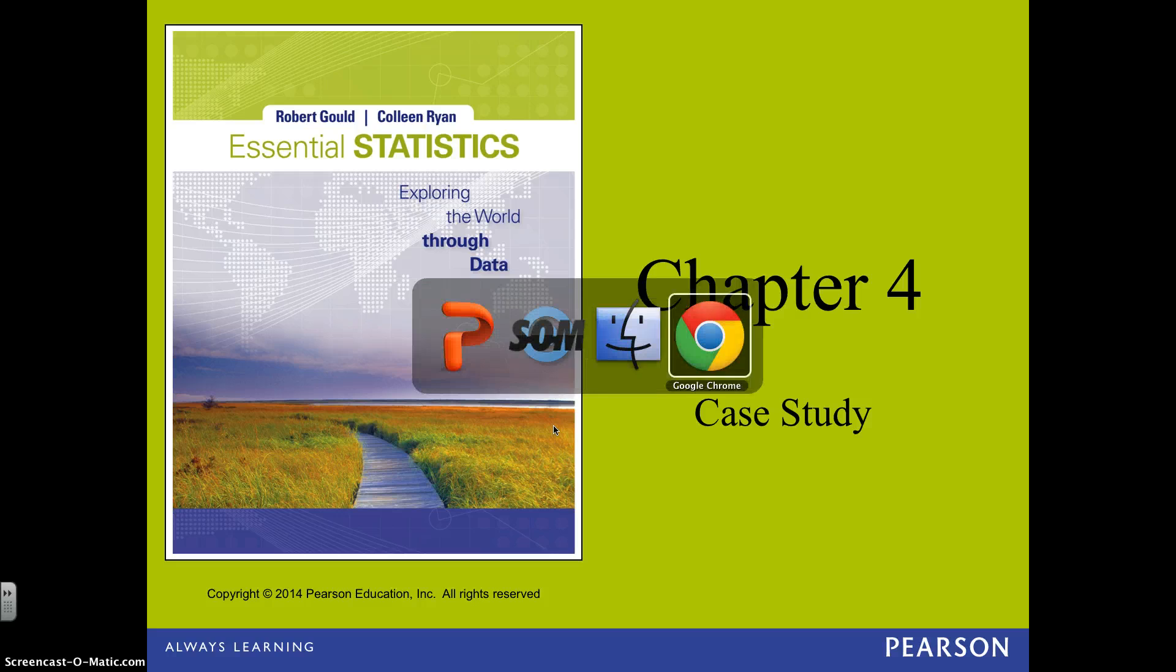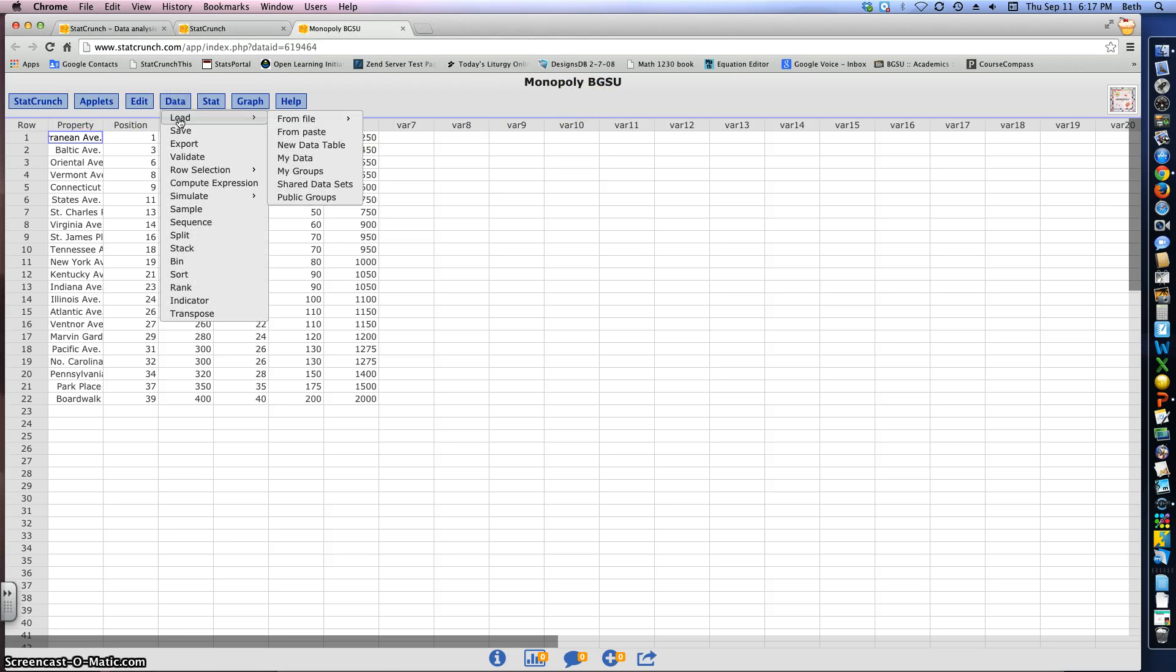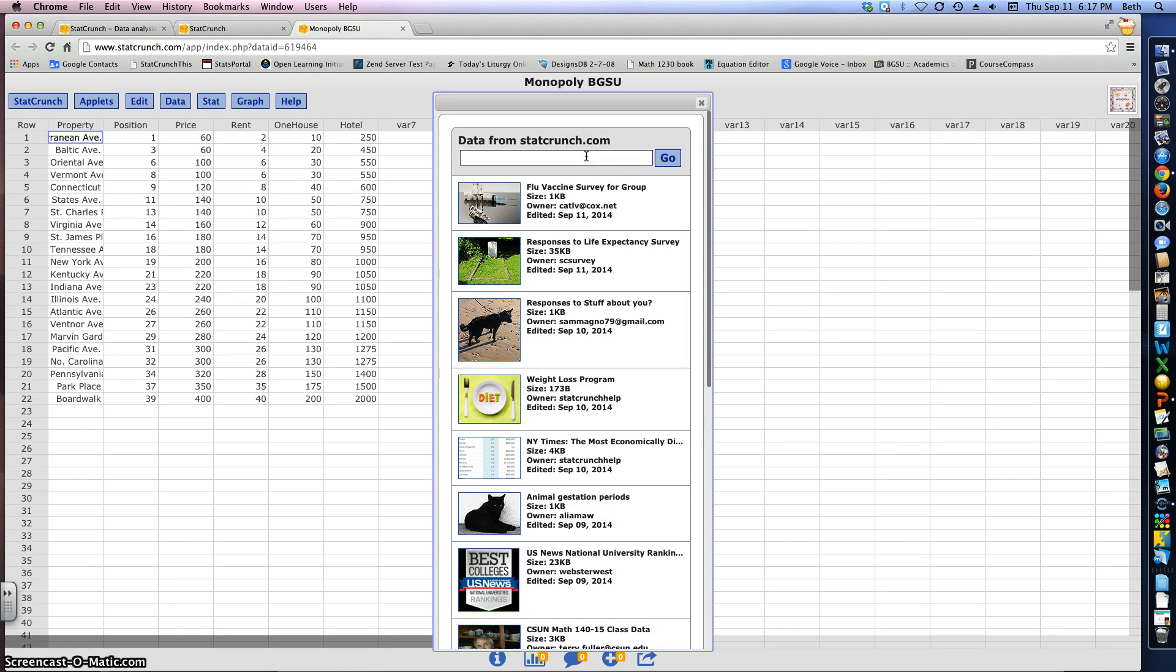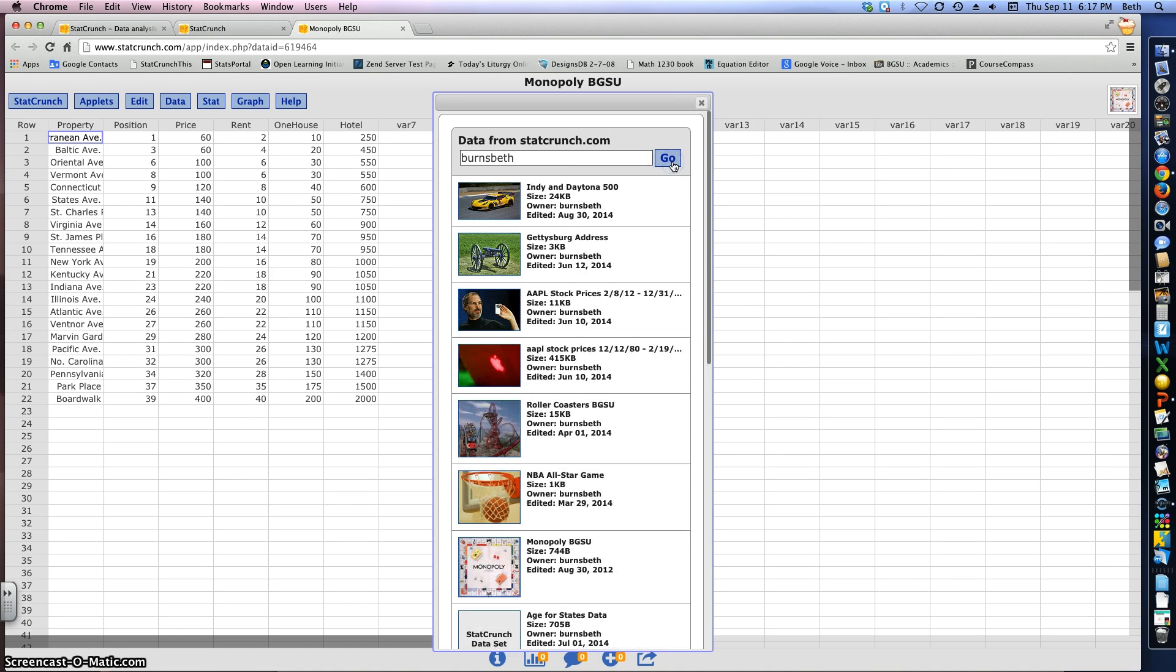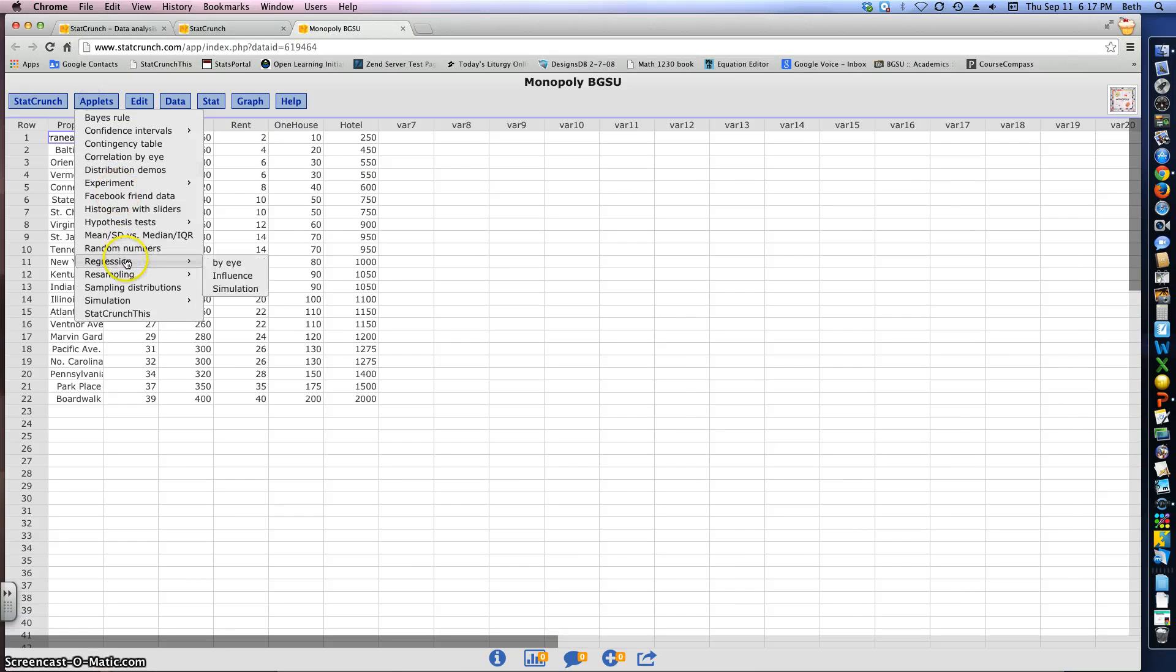So let's go over here to StatCrunch. I actually have this Monopoly data pulled up. So if you actually want to find it, you could go to Data, Load, and you can do Shared Data Sets. And again, if you just type in my name in here, Burns Beth, click Go, you'll see this set called Monopoly BGSU. So open it.